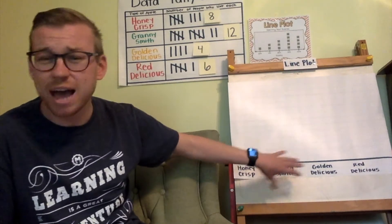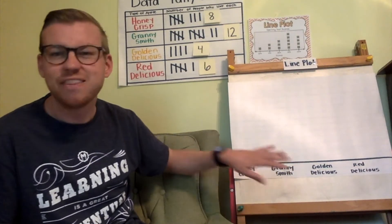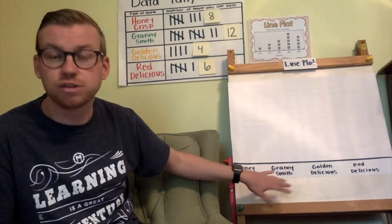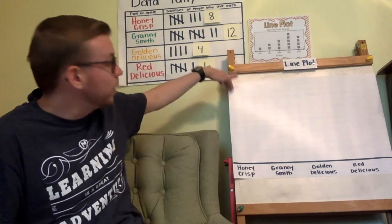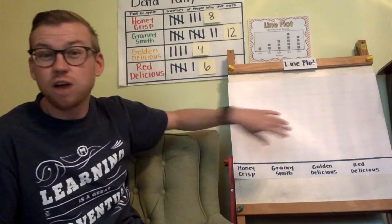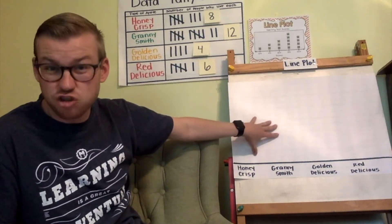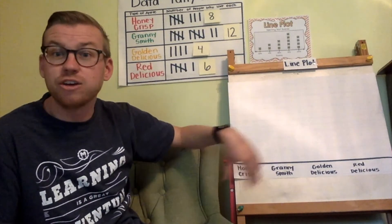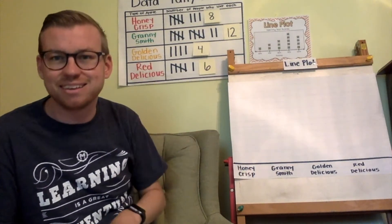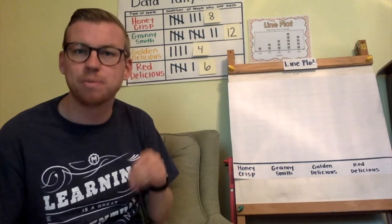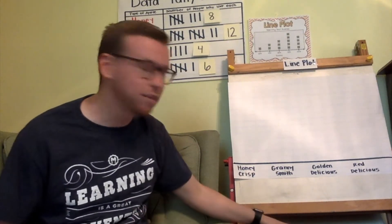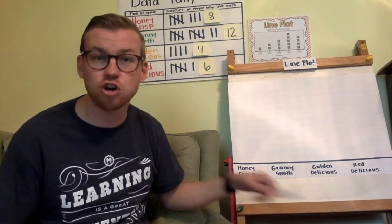The biggest thing I notice is there are no numbers. A bar graph had numbers that went up the side, but when I look at this chart I see no numbers at all. So I know I'm going to put X's, and every X is going to represent one person. Let's go ahead and make this chart together.